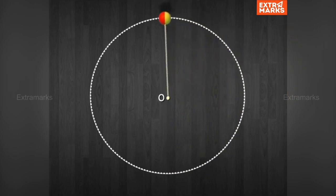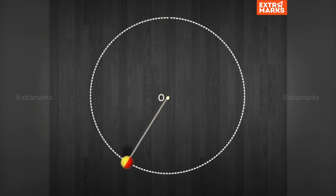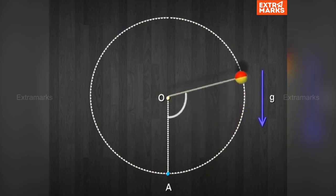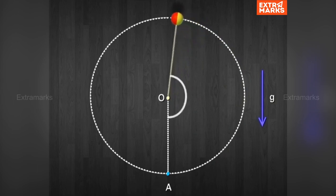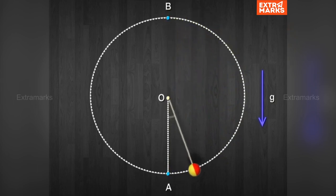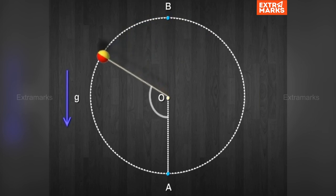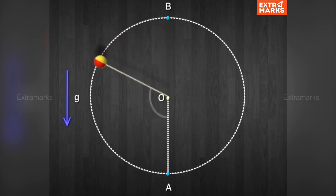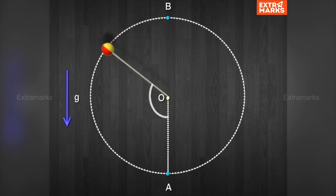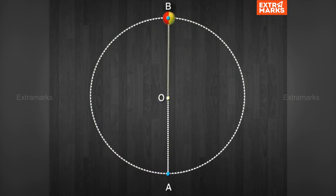The first part is when the object goes up in a direction opposite to that of gravity, and the second is when it comes down in the same direction as gravity. When the object goes up, its speed decreases and angular displacement increases. At the highest point, speed becomes minimum and angular displacement becomes maximum. When it comes down, speed increases and angular displacement decreases. When the object returns to its initial point, speed becomes maximum and angular displacement becomes zero.